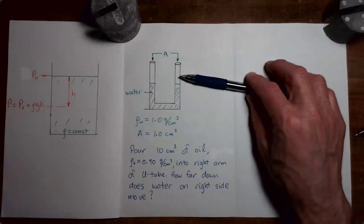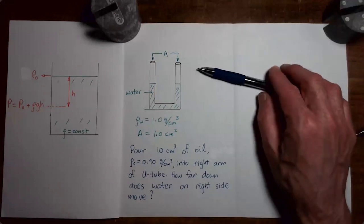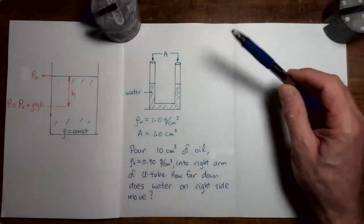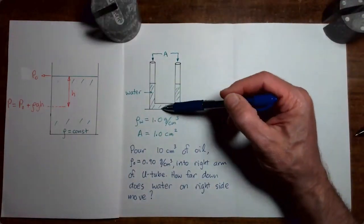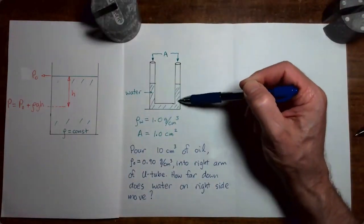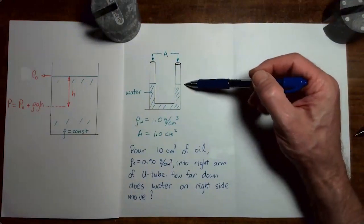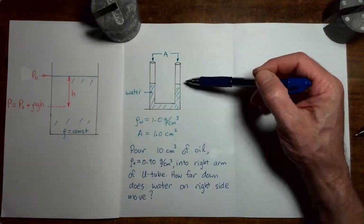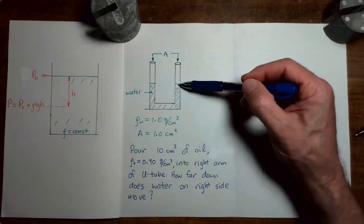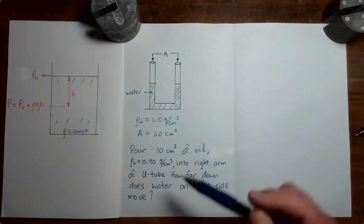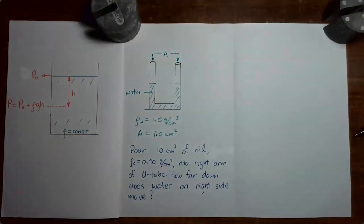The U-shaped tube has been filled with water, and the water has been sitting there for a while, so now the water is static — it's just sitting there without any actual flow. In this situation where the water is just sitting there without any flow, the height of the water column would be the same on either side of the U-shaped tube.